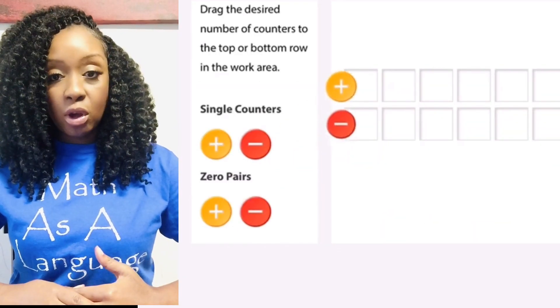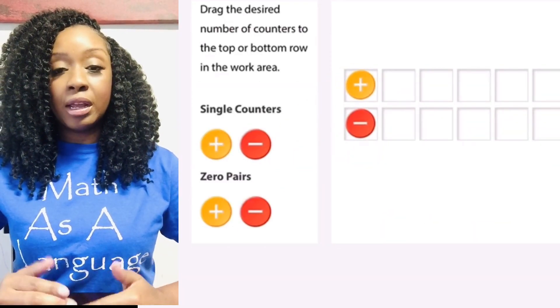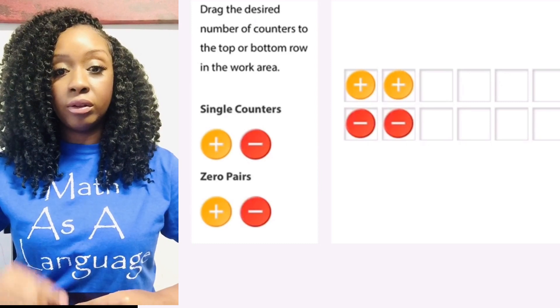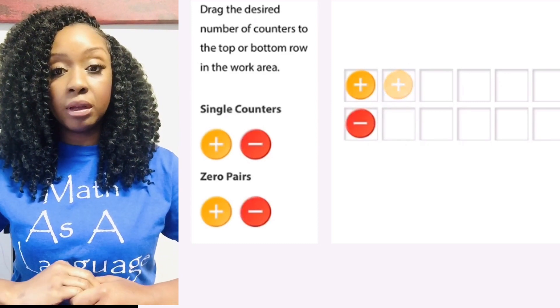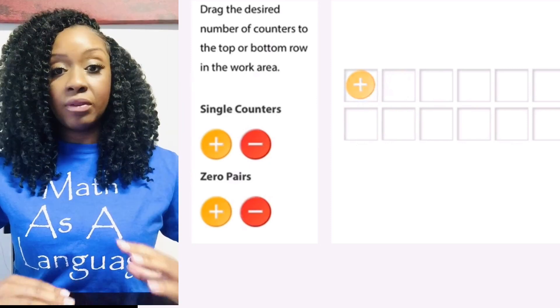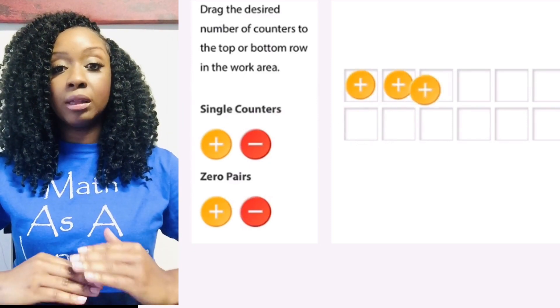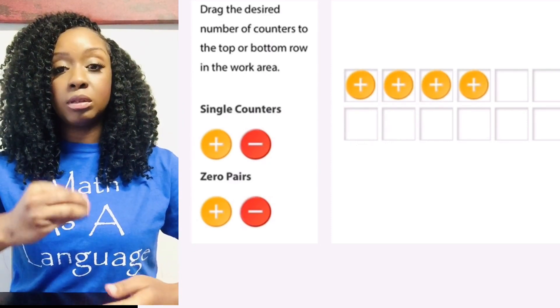What happens though if I were to put a red and a yellow together? Red and yellow together, if I slide this red up, it becomes a zero pair. So instead of adding them I'm going to subtract them because red and yellows together disappear.